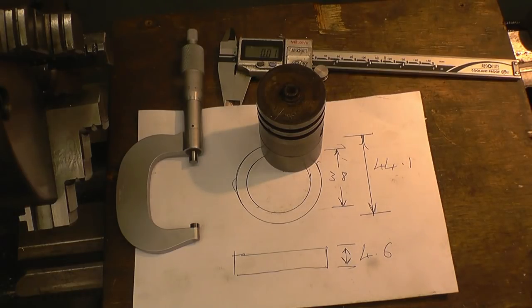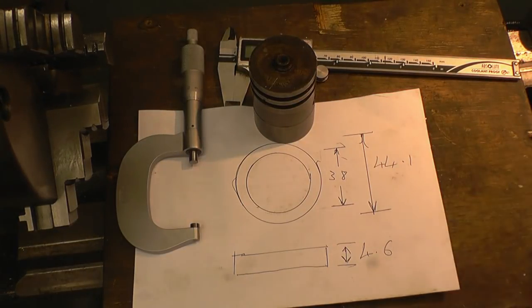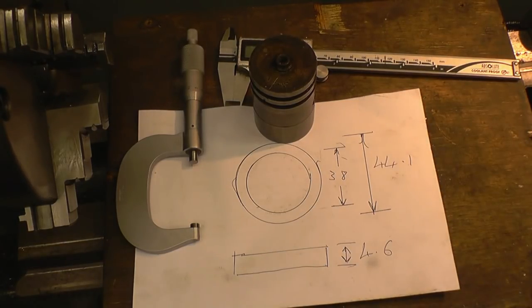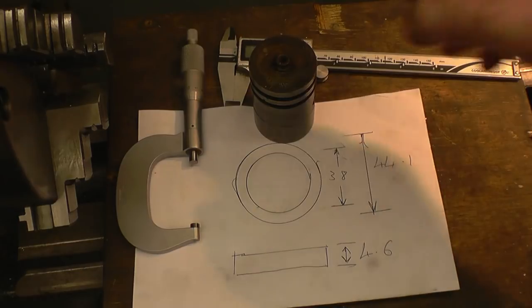What I can do is use the lathe and make some piston rings for the little gas engine. I've measured the piston up and converted the sizes to metric because it's easier on this lathe. The piston has an outside diameter of 44.1, so I'm going to make the piston rings 44.1 with the inner diameter of 38. The pistons are 4.6mm thick.